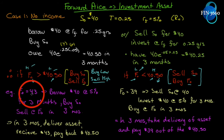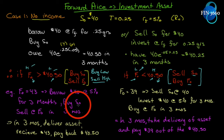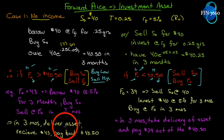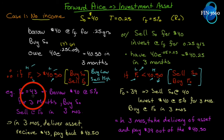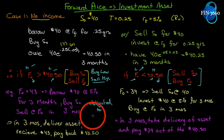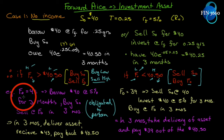Let's give an example. Say the futures price is $43 and the spot price is $40 today. We borrow $40 at 5% for three months, buy the asset, and short one futures contract at F₀ = $43 for a three-month contract. In three months we'll deliver the asset — because when you're short a futures contract, you're delivering the asset. It's worth noting that in futures and forwards, both parties are obligated to perform.